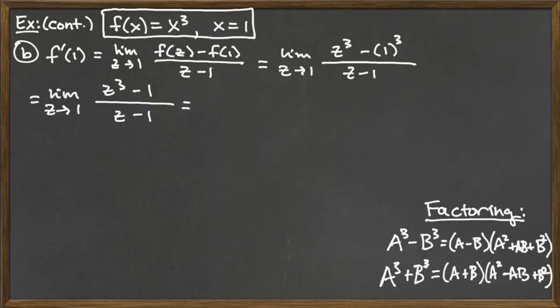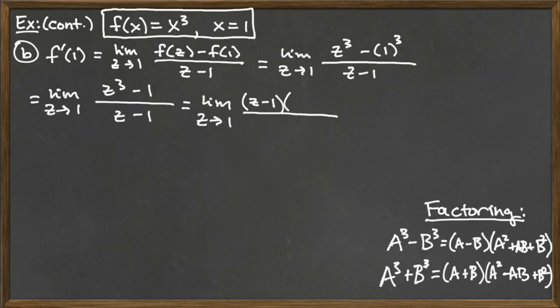We have a difference of cubes back in this problem. So we have the limit as z approaches 1, and the top is a difference of cubes. For the first factor, we drop the cubes, giving us z minus 1. The second factor on the top has the first term squared — z squared — and the third term is negative 1 squared, which is positive 1.